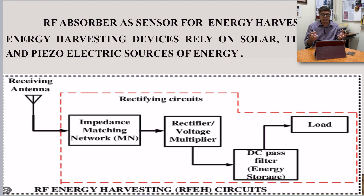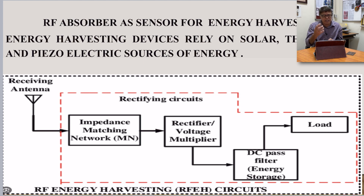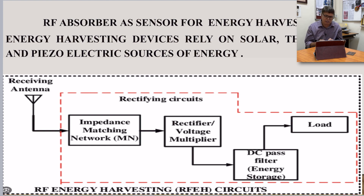RF energy is freely available as GPS signal, radar signal, Wi-Fi signal, TV, and FM signals. We can design our RF energy harvesting devices for a particular frequency — only a little circuit configuration needs to be integrated.